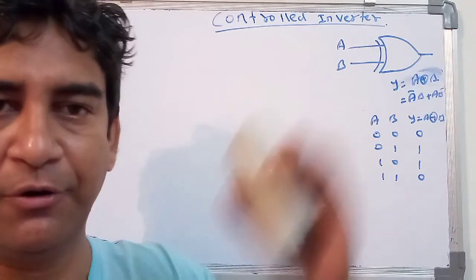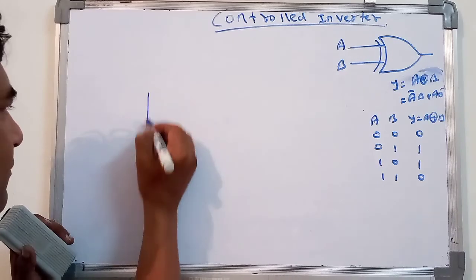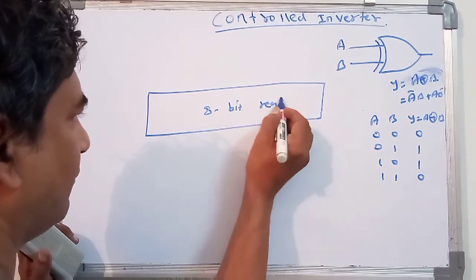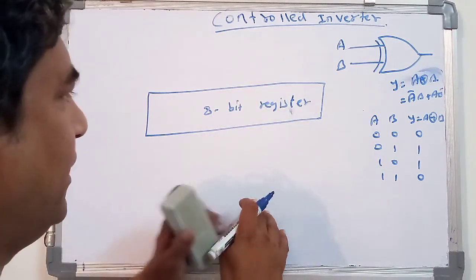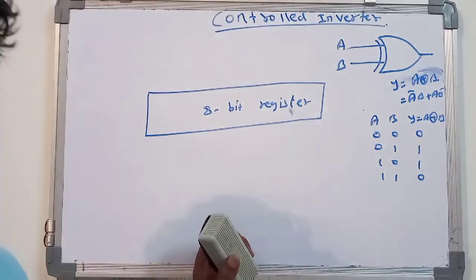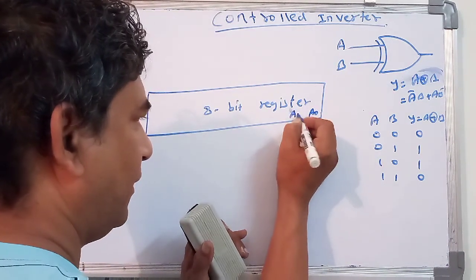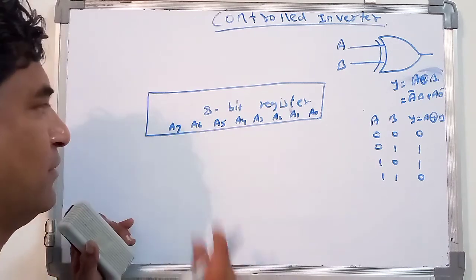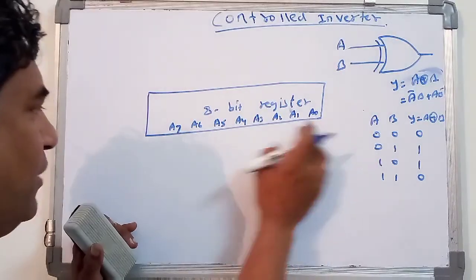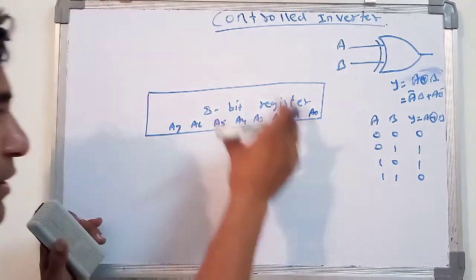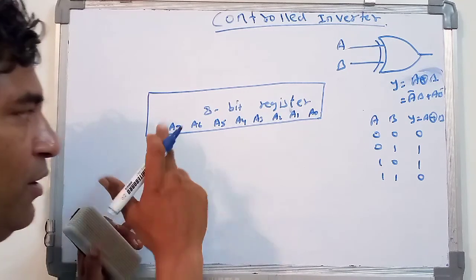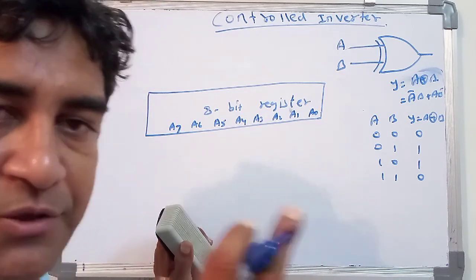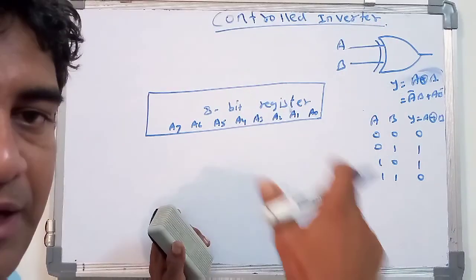In a microcomputer or microprocessor, you have an 8-bit register. In this 8-bit register, you have values stored: A0, A1, A2, A3, A4, A5, A6, and A7. Starting from 0 and ending at 7 gives you the 8-bit value. All input values A0 to A7 are connected with XOR gates, and one input of each gate is connected with the inverter so that the output will be fluctuated.